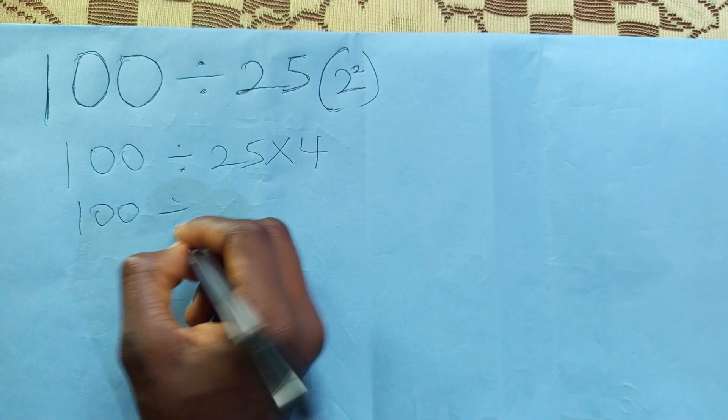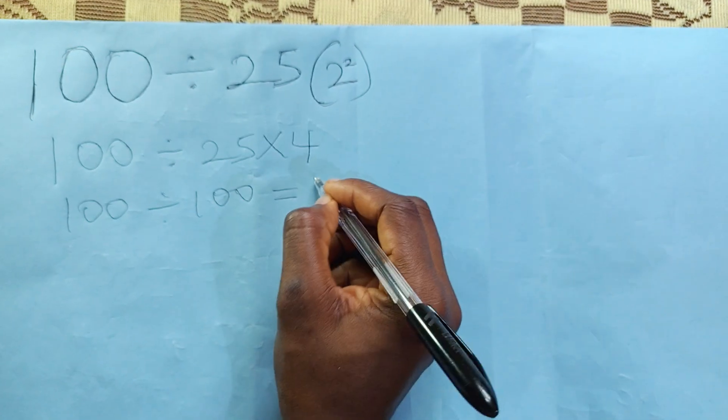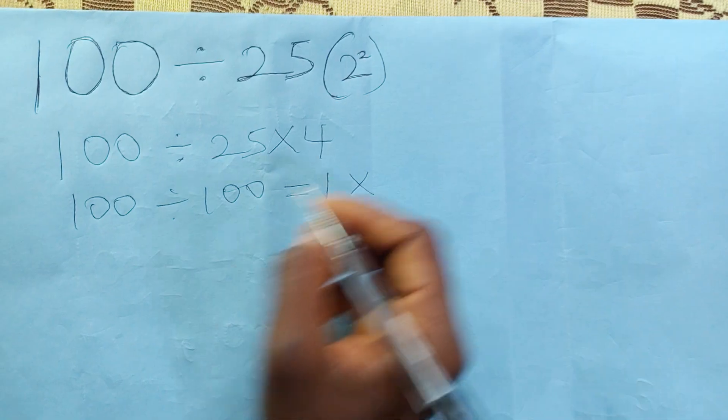100 divided by 25 times 4 will give you 100. 100 divided by 100 will give you 1. But this answer is not correct.